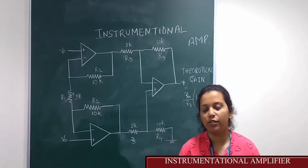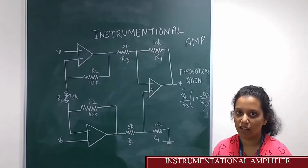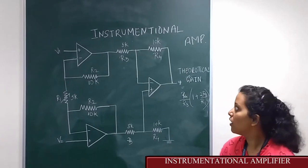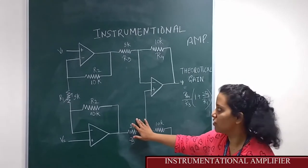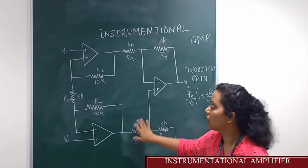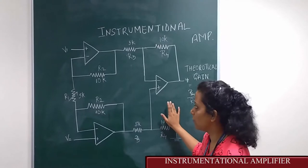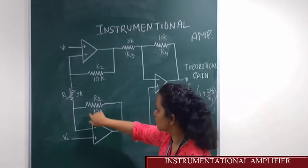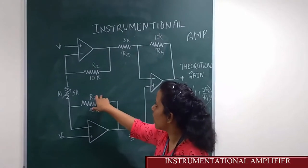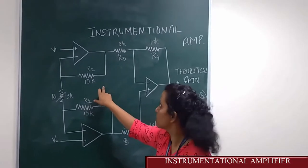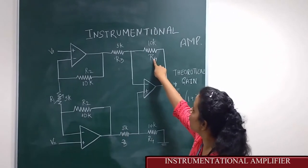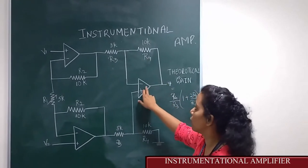Welcome to CE2Lank. Our today's experiment is based on instrumentation amplifier. This is the circuit diagram of the instrumentation amplifier. Here we are using three different operational amplifiers which are IC741. This resistance R2 is used as a feedback resistance. Here also, R2 is used as a feedback resistance for this op-amp.